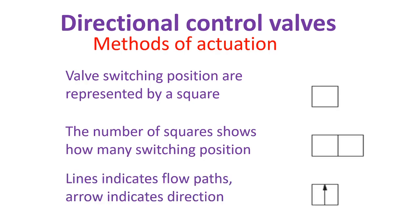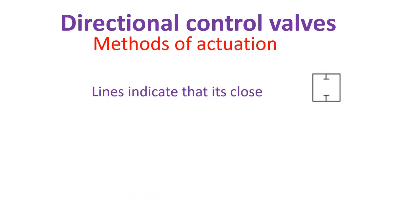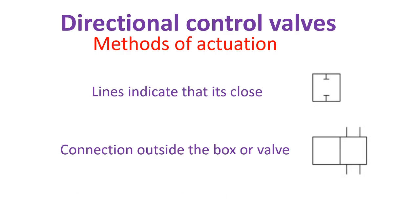Lines indicate flow path. Arrows indicate direction. Lines indicate that is closed. Connections outside the box or valve.